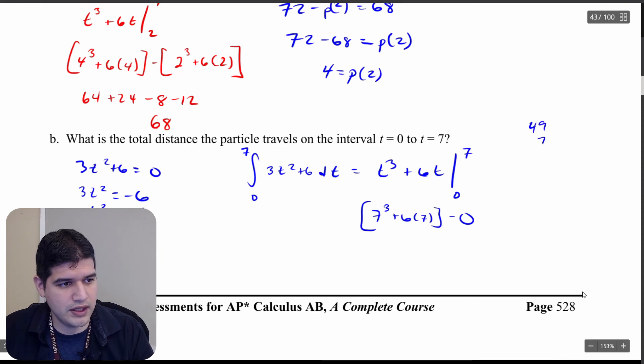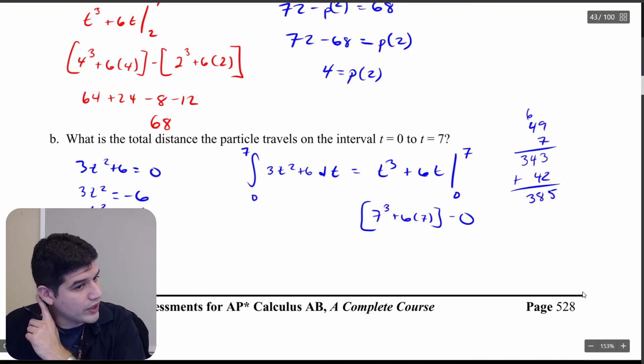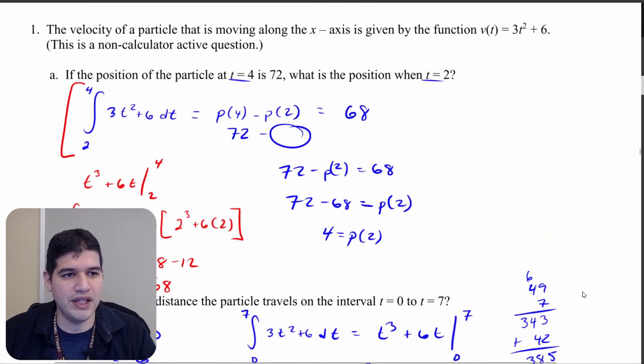So 7 cubed, 49 times 7 plus 6 times 7. All right so I added the 42 to that as well so I get a total for this integral of 385. And if we were given units I could say 385 feet, 385 meters whatever, but we're not given units in the prompt.